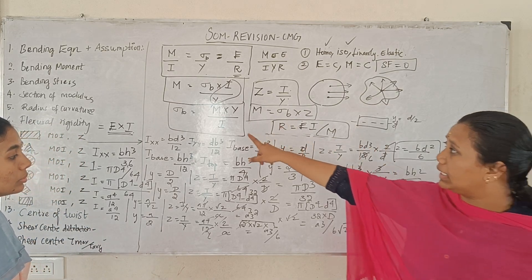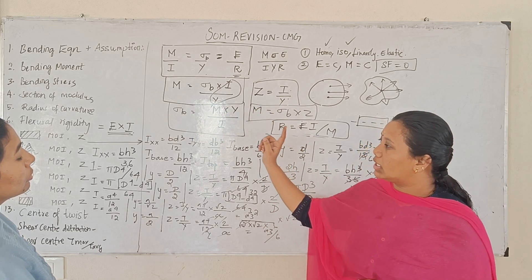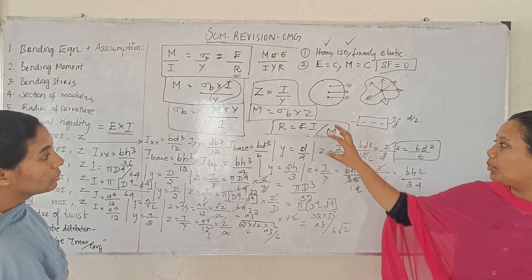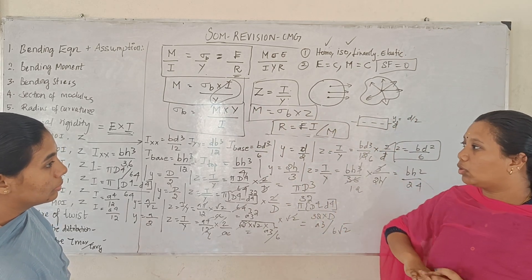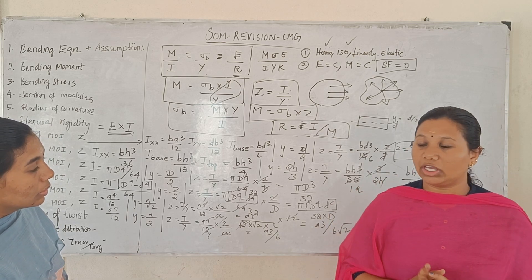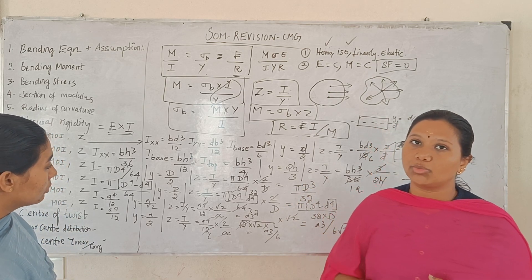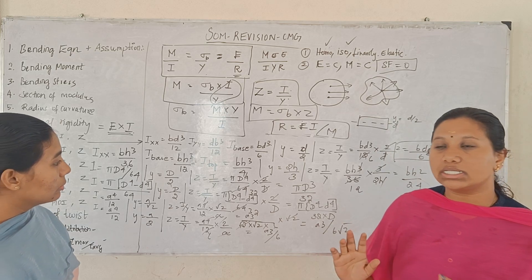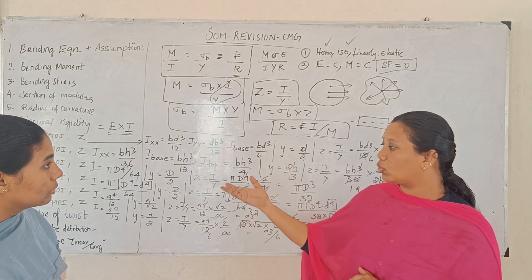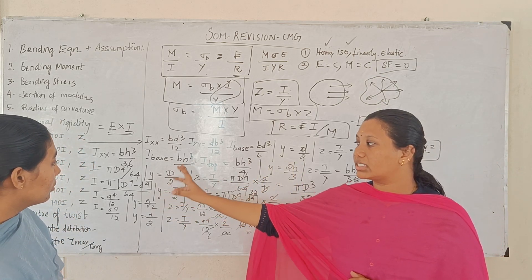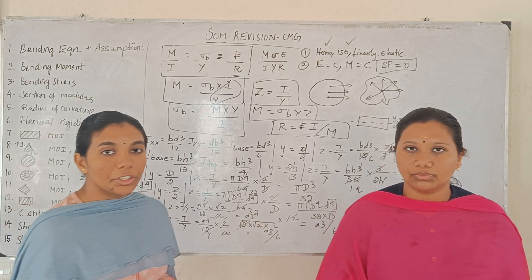So in this video we covered: the bending equation, bending moment, bending stress, radius of curvature, flexural rigidity, and various cross-sections — their moment of inertia and section modulus. Distance from neutral axis y for each section was also covered. Thank you.